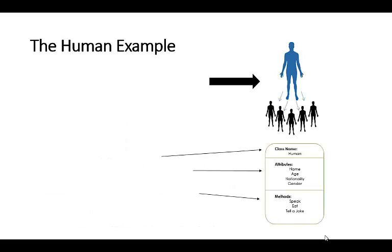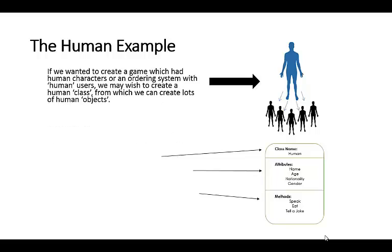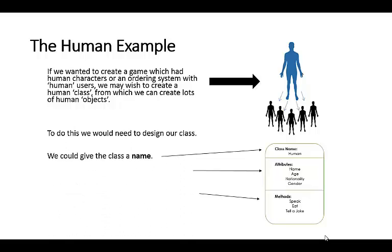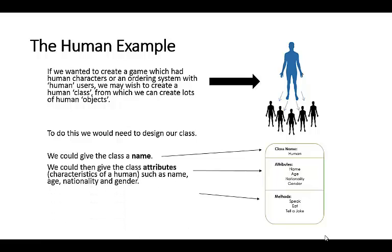So if we just look at the human example, if we wanted to create a program, perhaps a computer game which had human characters or an ordering system which had human users, and we wanted to make lots of different human objects from this class, our class might look something like this. It would need a name, we could call it human. We could give it some attributes, characteristics about the human: name, age, nationality, gender, and so on. And then we might want to also define its methods, things that it can do. It can speak, it can eat, it can tell a joke.